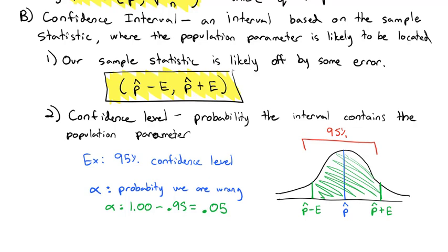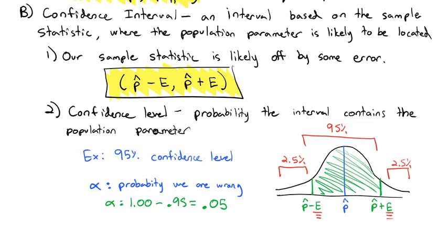Out in the tails is where we could be wrong. With 5% in the tails split across two tails, we have 2.5% in each tail. Our goal is to figure out what error amount to add and subtract in order to get 2.5% in each tail.